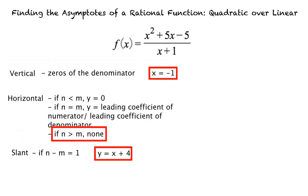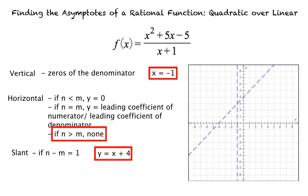This leaves us with two asymptotes: a vertical asymptote at x equals negative 1 and a slant asymptote at y equals x plus 4. The last thing we'll do is graph these asymptotes like so. This is our final answer.